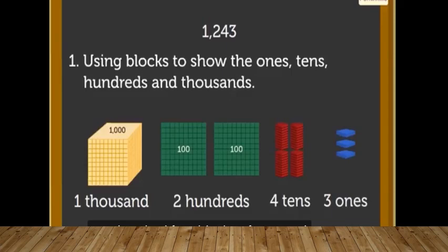So this can be represented as 1000 - how many 1000 blocks? 1. 200, 4 tens, and 3 ones, that becomes 43. Now we will read from left to right: 1243.